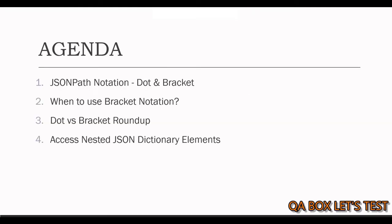The agenda of this video is on your screen. We would cover JSON path notations. There are two types of notations: dot and bracket. Since we have got multiple options, when to use bracket notation.